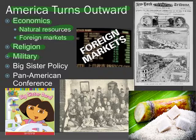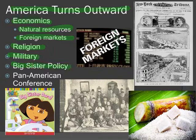So again, three big reasons for American imperialism: economics, religion, and military. Now, once we start reaching out to other countries and interfering in their affairs, we have to have laws or policies governing these things. One of the first of those is called the Big Sister Policy.